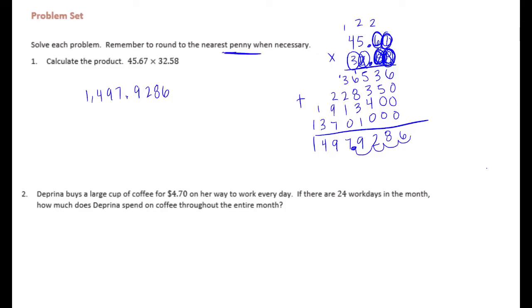But it says round to the nearest penny. The penny is the hundredths place right here. So I'm going to round to the hundredths place. That's an 8, so the 2 is going to become a 3. And we'll have 1,497 and 93 hundredths.